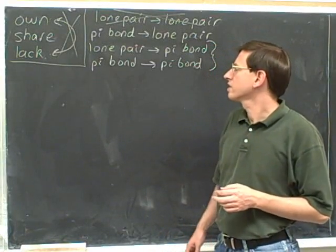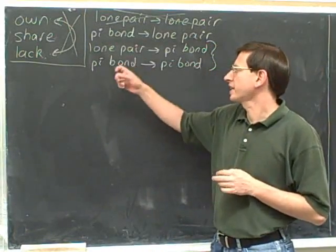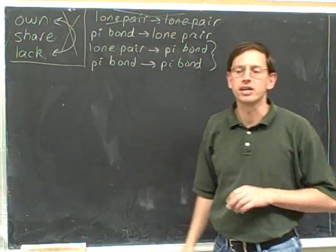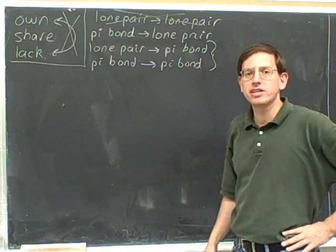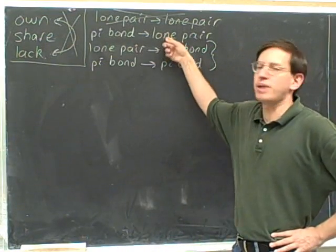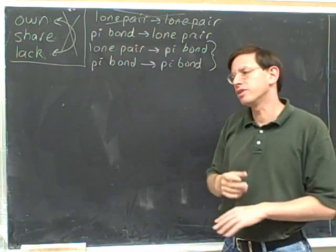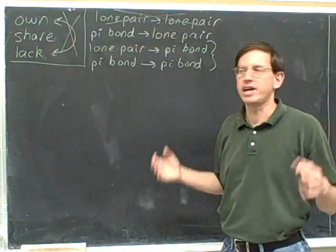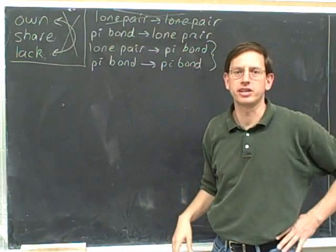We've been talking about the transition from taking electrons from a pi bond and making them into a lone pair. Now let's talk about the other two transitions. So far we've been talking about making a new lone pair, and we saw that when you make a new lone pair you don't need to worry about exceeding an octet — there's no way to exceed an octet when you make a new lone pair out of a pi bond.